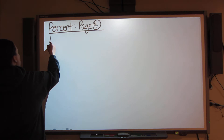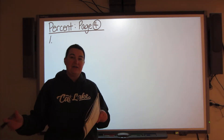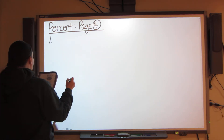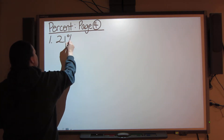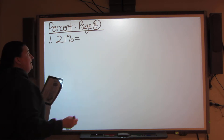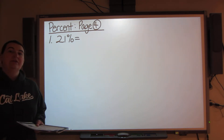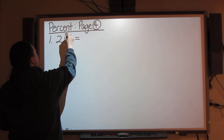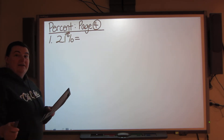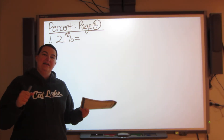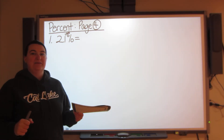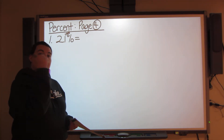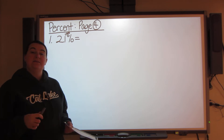Remember from the lesson how to change percents to decimals. So if I have on number 1, 21%, and I need to change this to a decimal, I need to divide by 100. Now remember powers of 10 — when you're dividing or multiplying by 100, you are going to move your decimal two spots. And since we're dividing, we're going to move to the left to make it smaller.